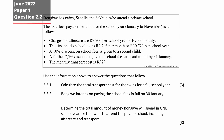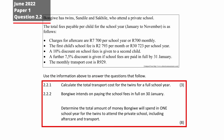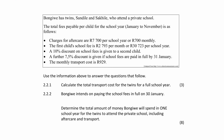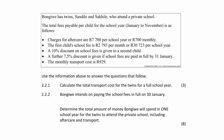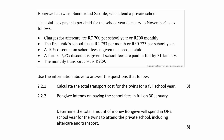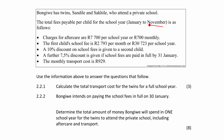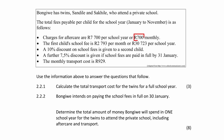Question 2.2 consists of two finance questions designed to assess your understanding of budgets and expenditures. You are given a list of the total fees payable per child for a school year, which consists of 11 months. Aftercare costs 7,700 Rand per school year or 700 Rand per month.